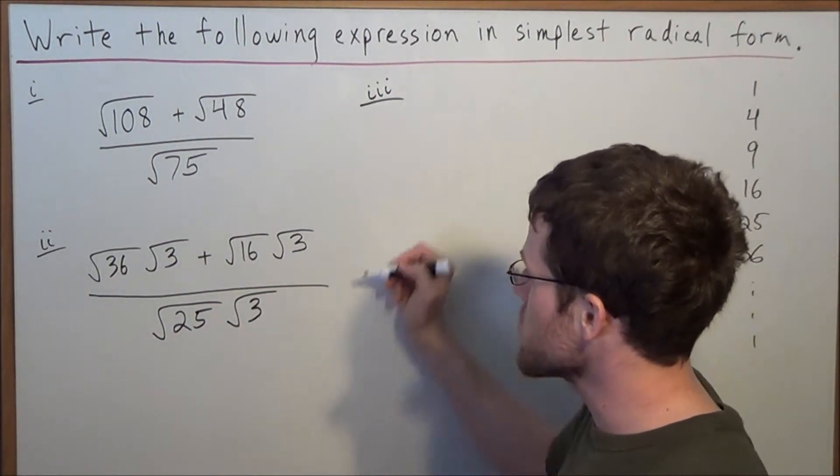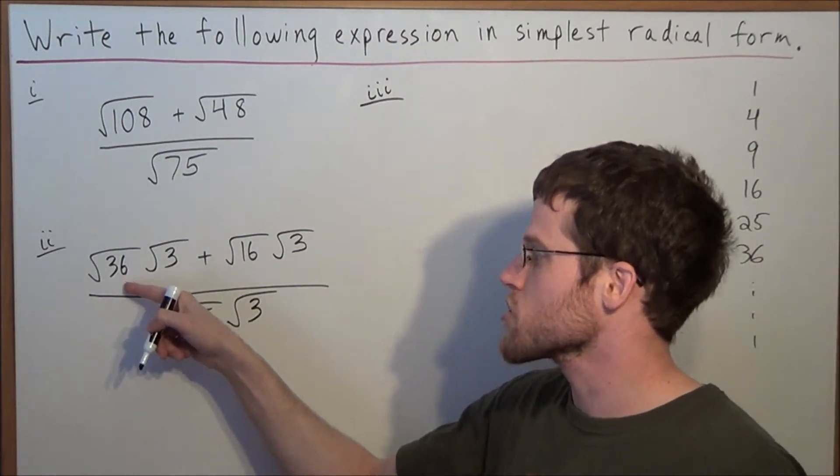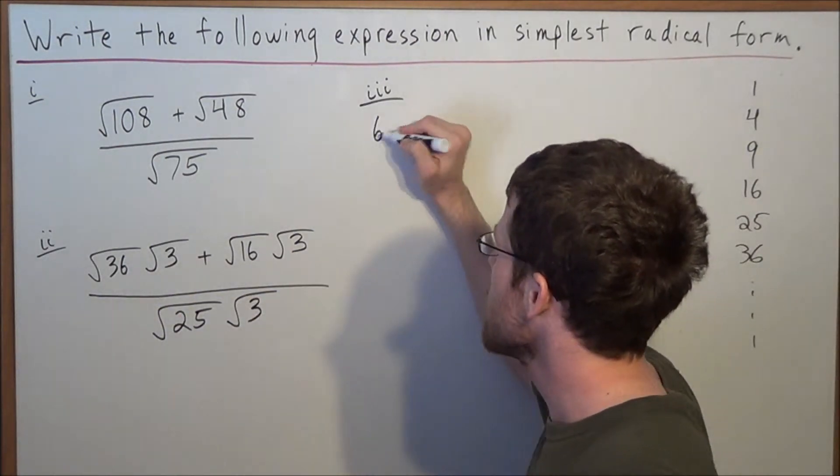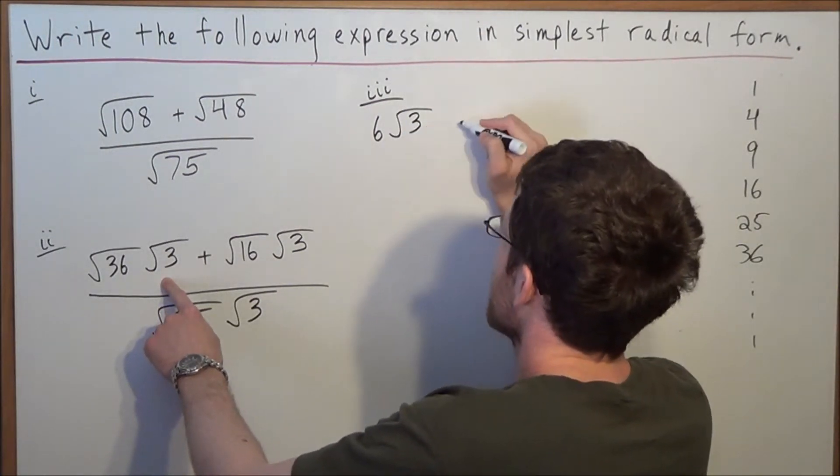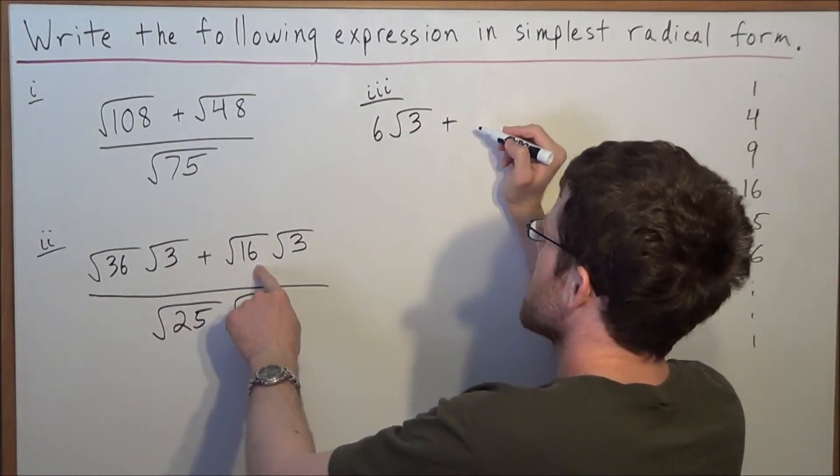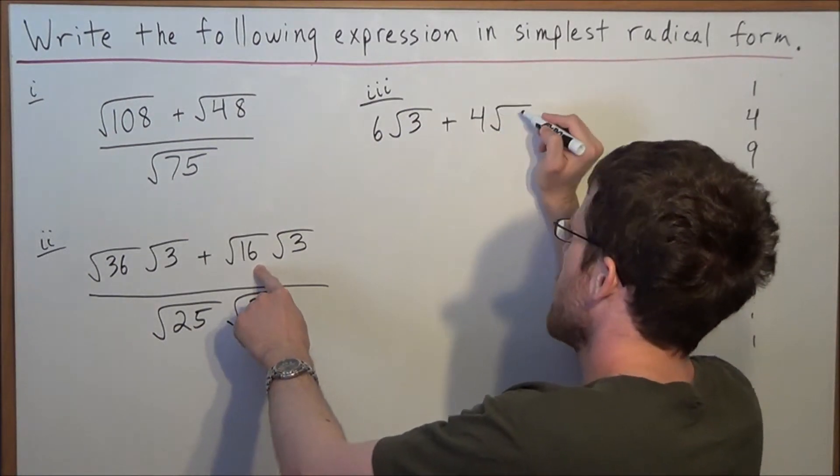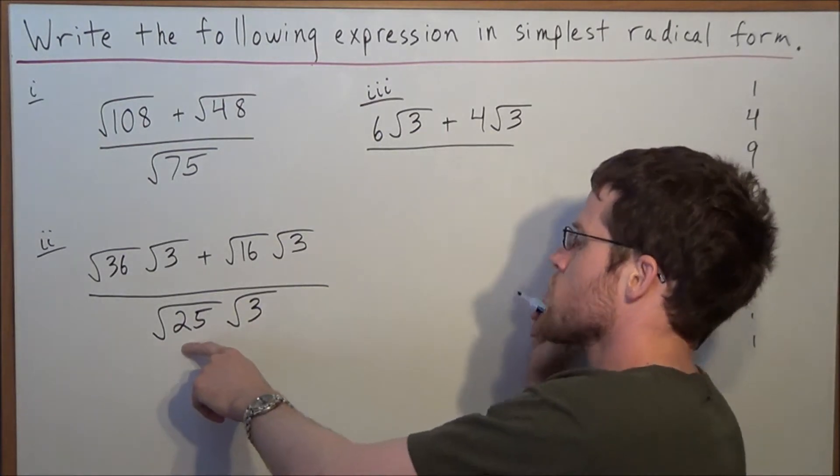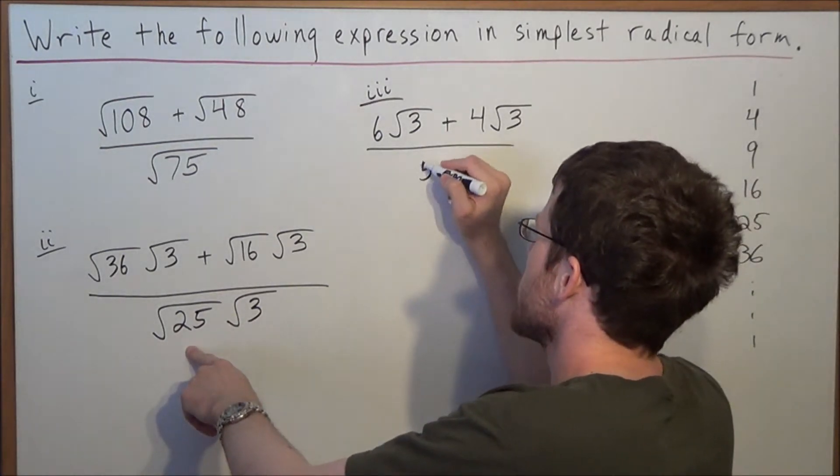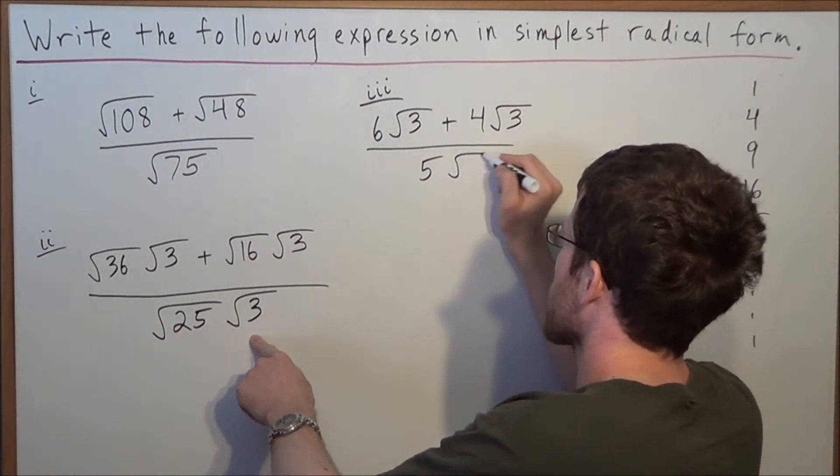So now for the third stage of this problem, we'll simplify. The square root of 36 is 6. So we have 6 radical 3 plus the square root of 16 is 4. So we have 4 radical 3. And we're dividing by the square root of 25 is 5. So we have 5 radical 3's.